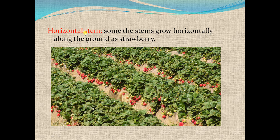Horizontal stem — some stems grow horizontally along the ground, and such stems are called horizontal stems. The example is the strawberry plant. In this diagram, the stems shown are horizontal stems.